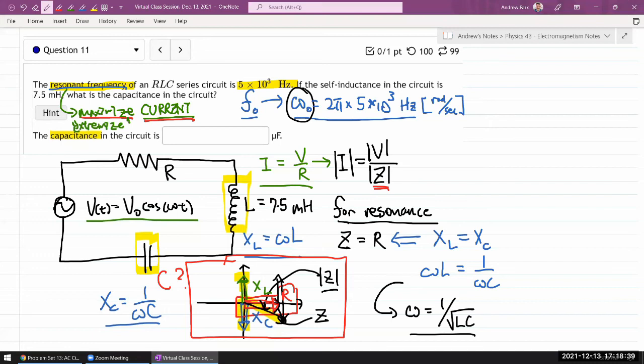So what I have to do is I actually have to solve for capacitance since the thing is asking for capacitance. So let me actually solve this for capacitance instead. I'm doing it in my head. The capacitance should be equal to 1 over omega squared L. So that's it.